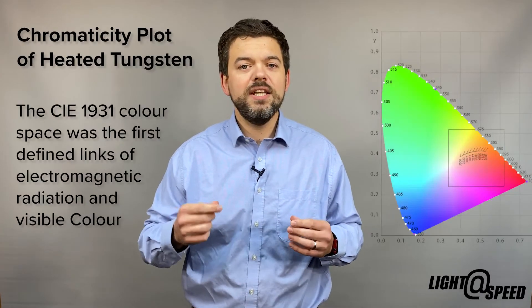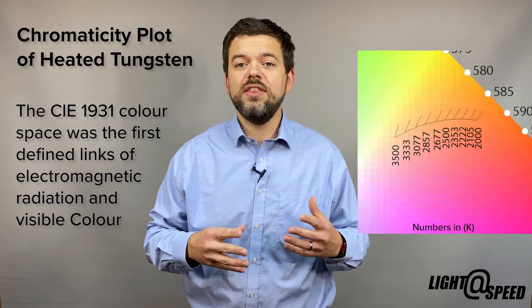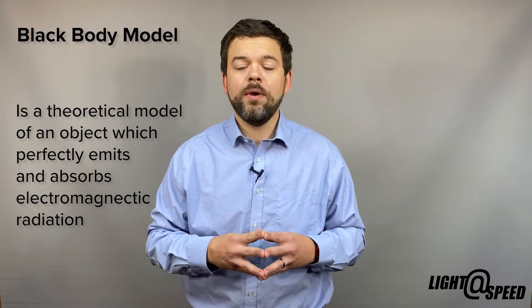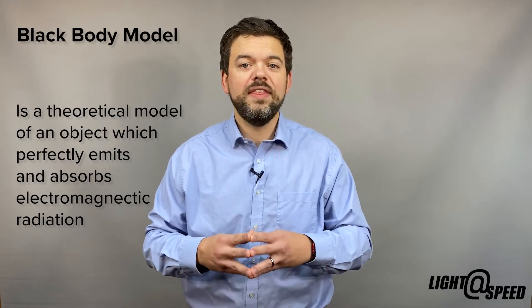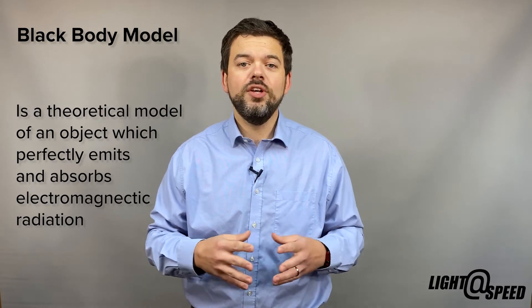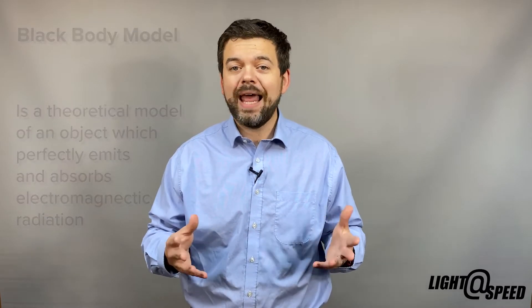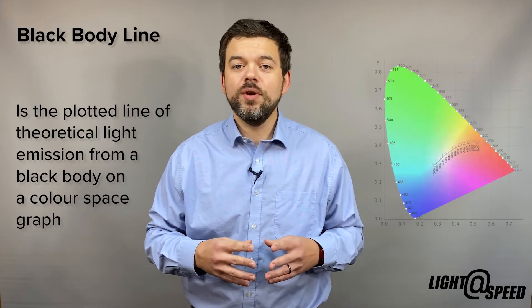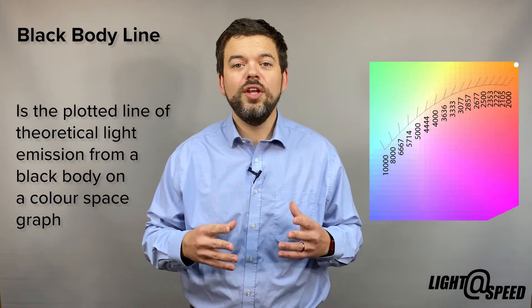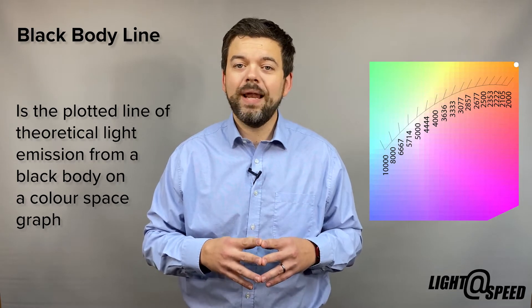The light emitted could be plotted on a CIE 1931 chromaticity colour space graph, but only up to the point at which tungsten melts. So instead of using tungsten's plots, physicists devised a theoretical model of an object which perfectly absorbs or radiates the electromagnetic spectrum, and at ambient temperature absorbs almost all of the spectrum and therefore looks black. When the light response of this black body model is plotted on the chromaticity graph, you get the Planck and Locus or black body line.